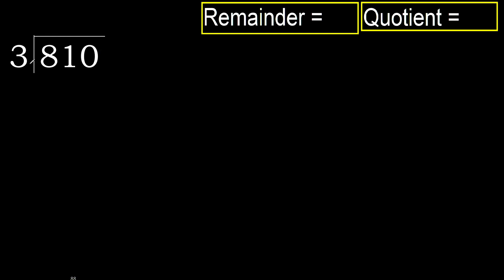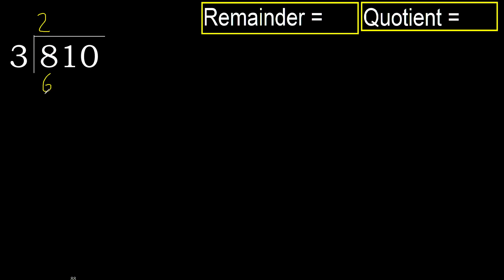810 divided by 3. Starting with 8: 8 is not less, so we work with 8. 3 multiplied by which number is nearest to 8 but not greater? 3 multiplied by 3 is 9 — that is greater. Multiply by 2: 3 multiplied by 2 is 6, which is not greater. So we use 2.